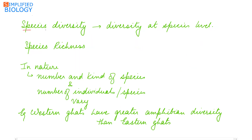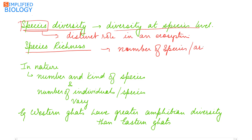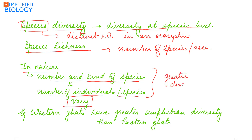Next is species diversity — diversity at the species level. Species play an important and distinct role in an ecosystem. The measure of species diversity is species richness, that is the number of species per unit area. In nature, the number and kind of species and the number of individuals per species vary, leading to greater diversity. The Western Ghats of India have greater amphibian diversity than the Eastern Ghats.